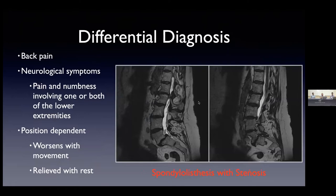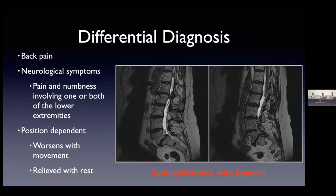Now the severity of pathology is getting worse. This condition is called spondylolisthesis. We briefly discussed how important it is for the vertebral segments to line up anatomically and protect the nerves. Here you can see something's not right — this is the bottom lumbar vertebra and the sacrum, and it's almost as though the entire spinal column is falling off of the sacrum. This causes narrowing of the foramen where a nerve exits the spine, producing back pain, radiculopathy, and radiating symptoms into the lower extremities — again, position dependent.